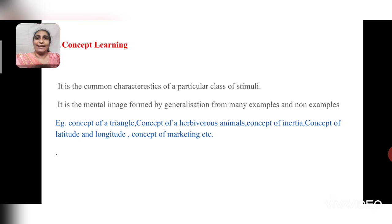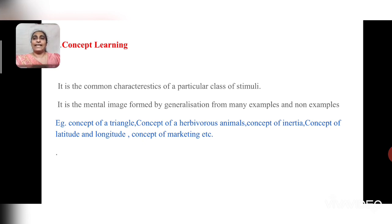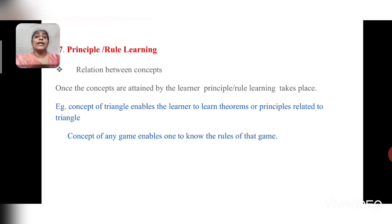In concept learning, the child learns the concept of a triangle — that unlike other shapes, a triangle has three sides, all connected, it is closed, and it has three vertices. Similarly, he can form concepts of herbivorous animals, inertia, kinetic energy, and potential energy by finding common characteristics. Once the teacher confirms that the concept is properly attained, the next level of learning takes place.